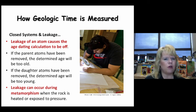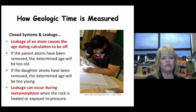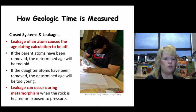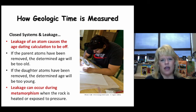Unfortunately, during that process you can get leakage of an atom, which causes the age date calculation to be off. That's why there's usually a plus-or-minus amount of years on the geologic time scale, and why we don't expect perfectly on-target results. It's a relative date with absolute dating techniques applied.